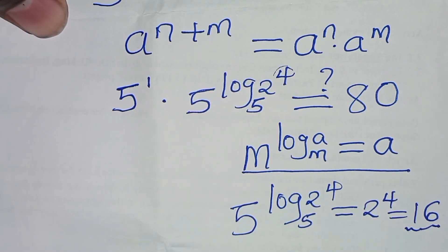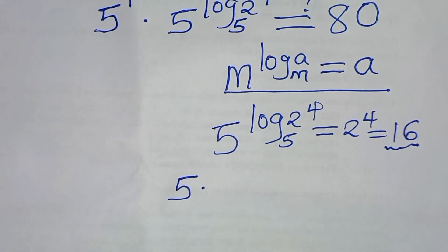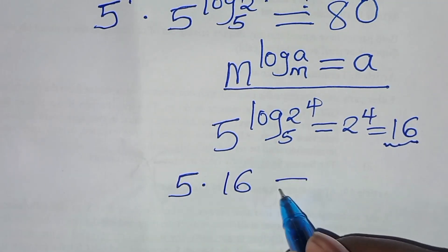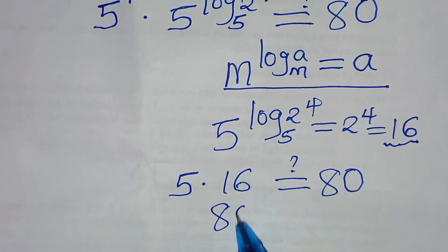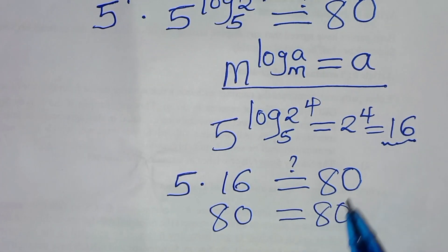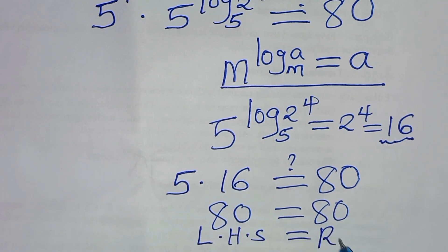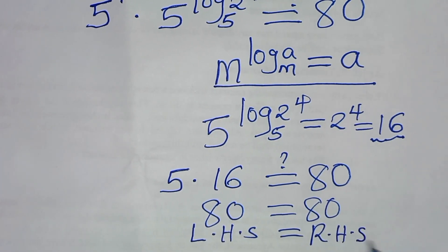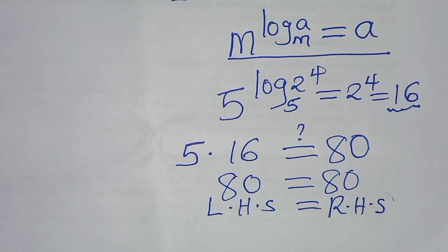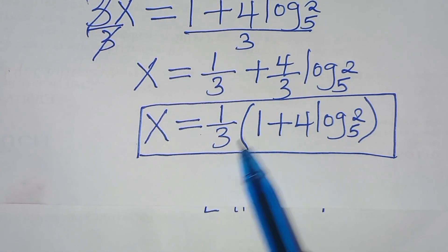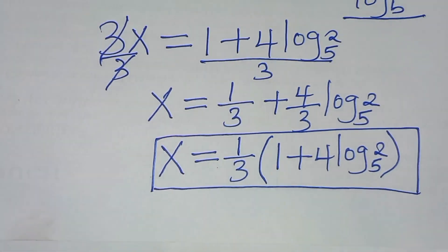So substituting, we have 5 times 16, which is 5 times 16 equaling 80. This gives us 80 equals 80, confirming that the left hand side equals the right hand side. This implies that the value of x, which is 1 over 3 times the quantity 1 plus 4 log 2 to base 5, satisfies the equation.